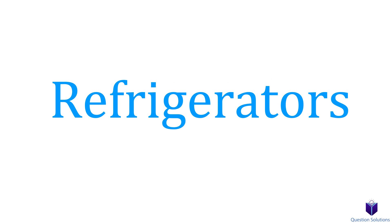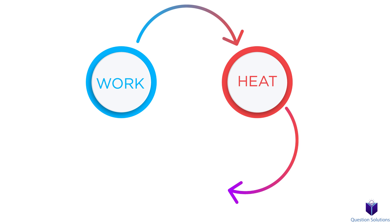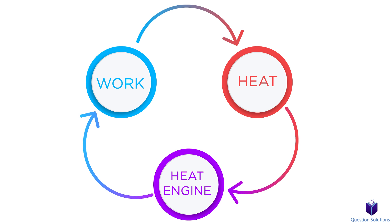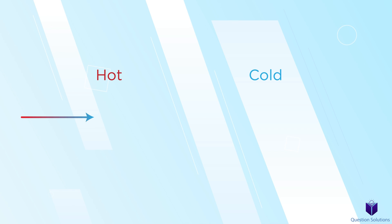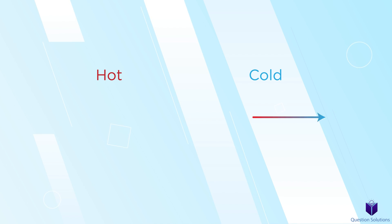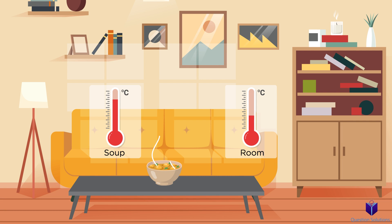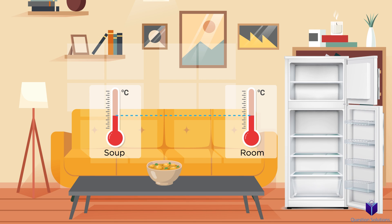In the previous video, we talked about process paths, so work being converted to heat and using devices called heat engines to convert heat back into work. We also know, from our day-to-day interactions, that heat is transferred in the direction of decreasing temperature. So if you have a hot cup of soup, it decreases in temperature until it's room temperature. This happens naturally, without us having to do anything. However, if we wanted to transfer more heat from our soup to below room temperature, we need special devices.